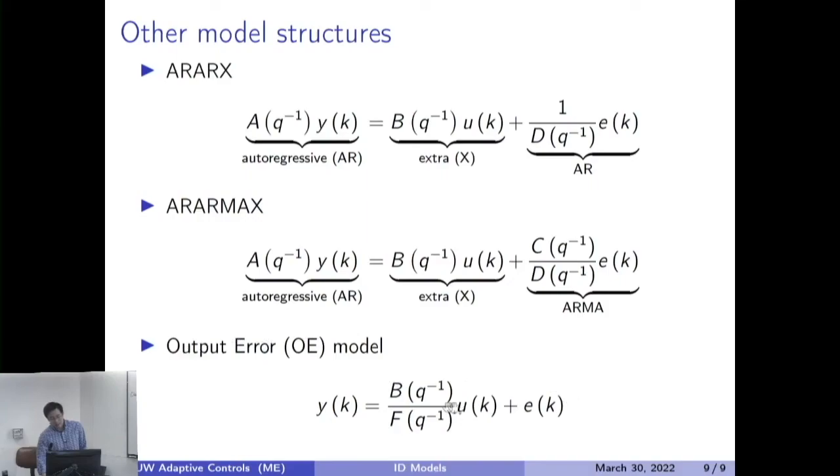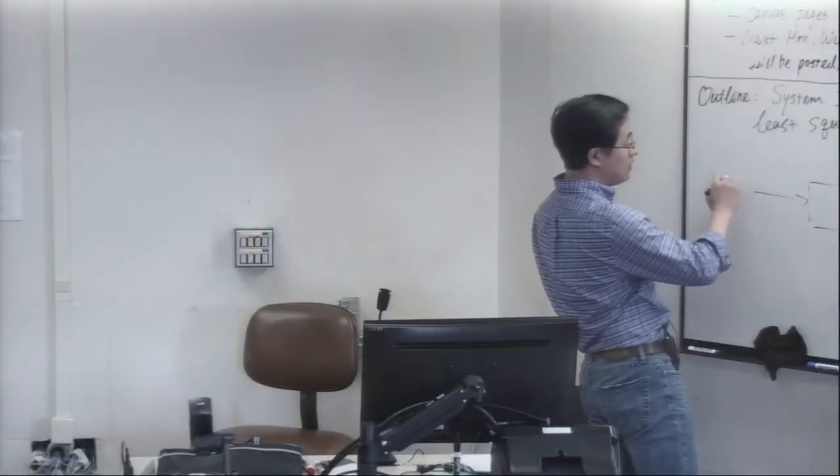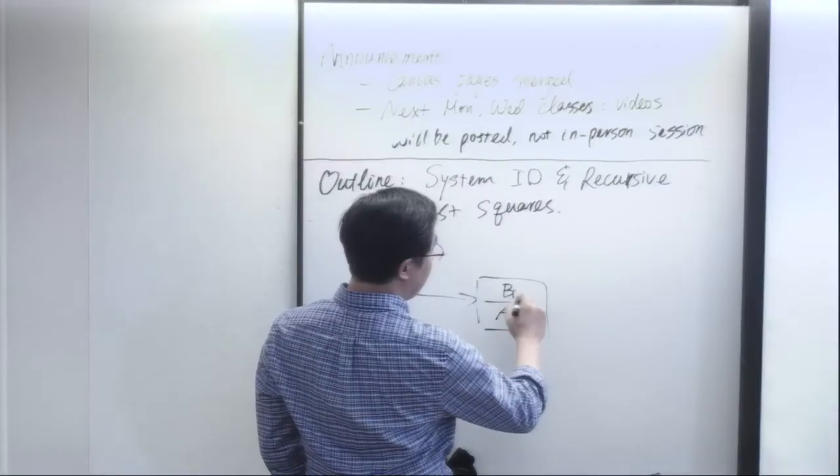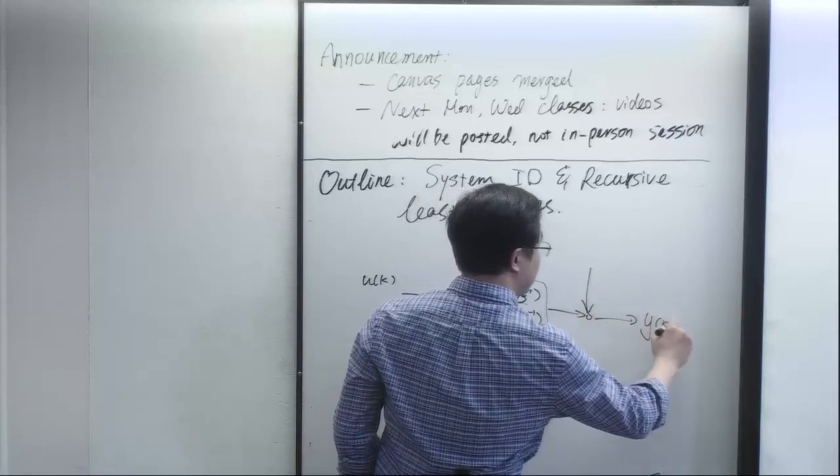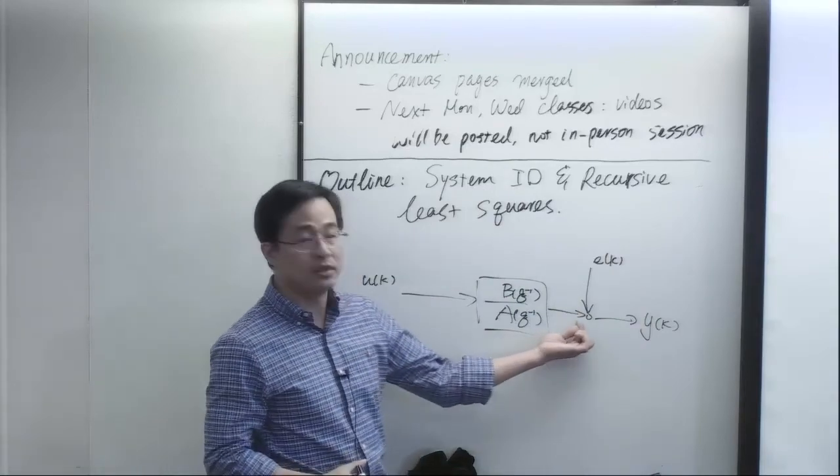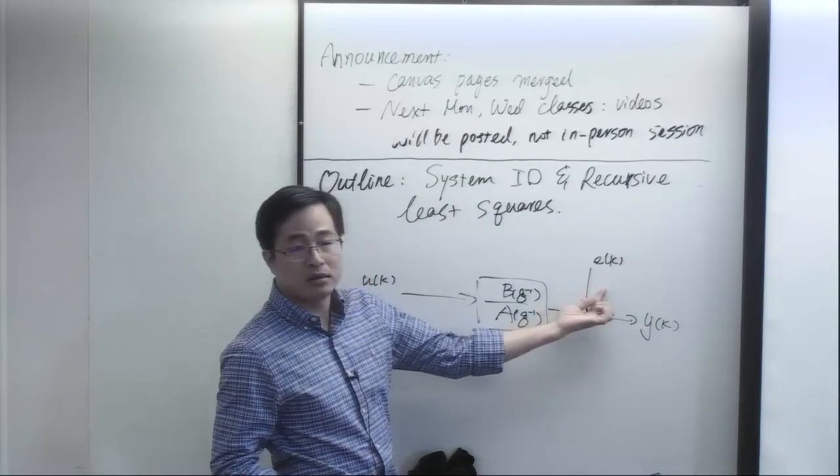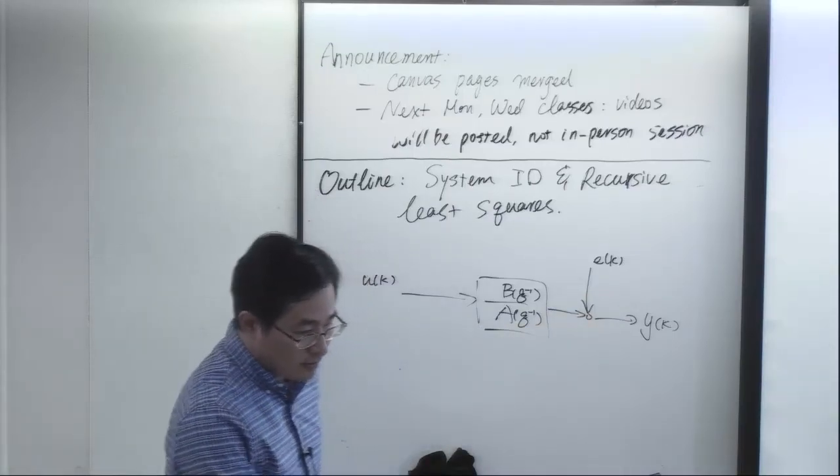And then, finally, there can be an output error model, where this E will enter as an error in the output. You can see E is in the same position. E is placed at the same position. In the block diagram, this means Y will be simply this. We have a control input. We have a system dynamics B over A. And then, this error will enter into the picture by going in here, at the output side. So, this is called output error model.